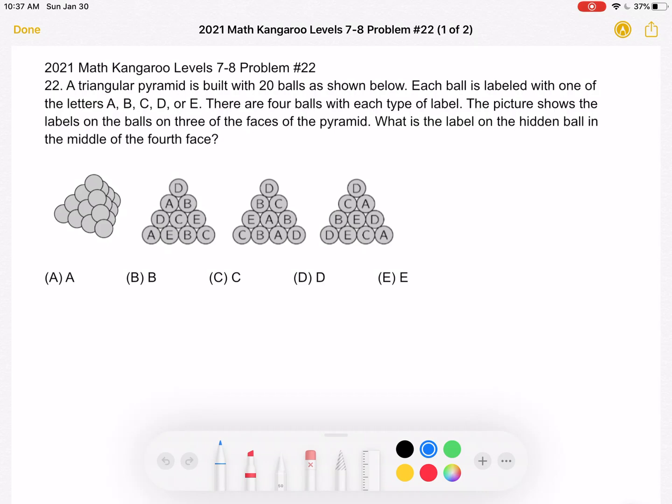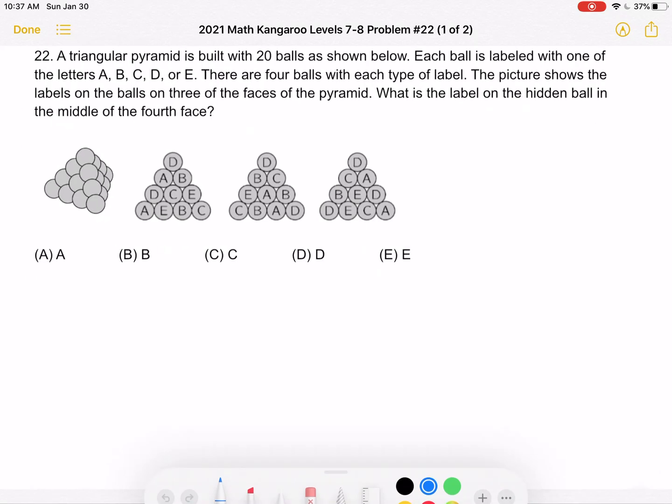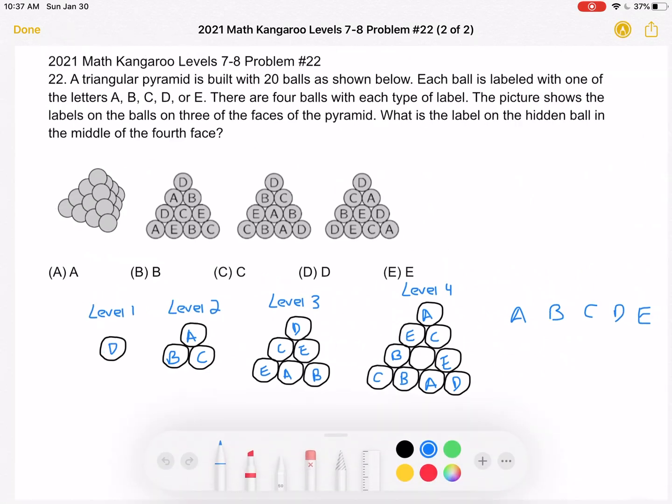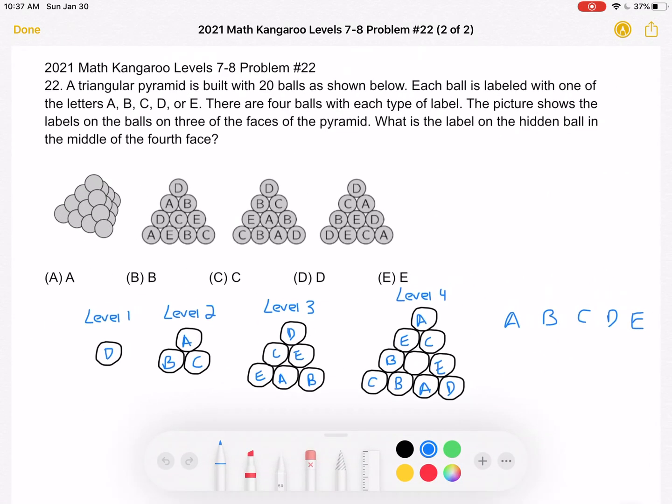This is the problem as it originally appeared on the test, and here is where we'll be doing the solution. So as you can see, I've drawn out each level of our pyramid. And we're going to label all the balls except that middle one, which we're trying to find what label it has.